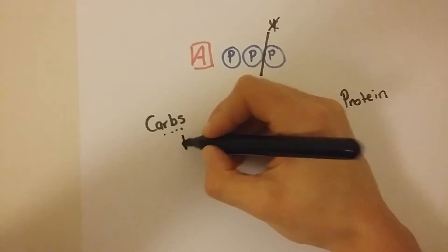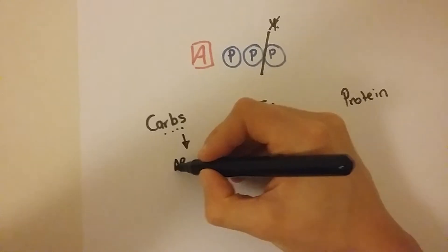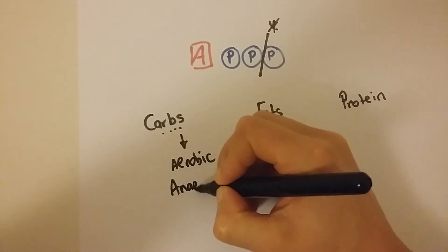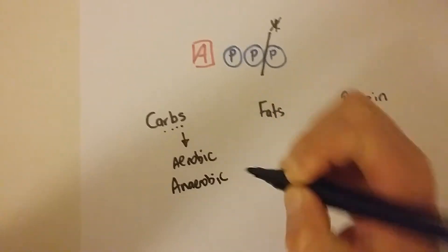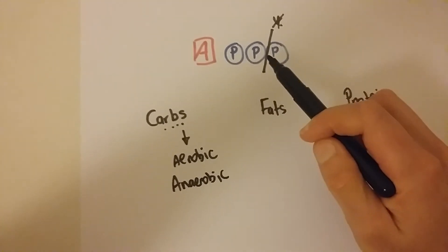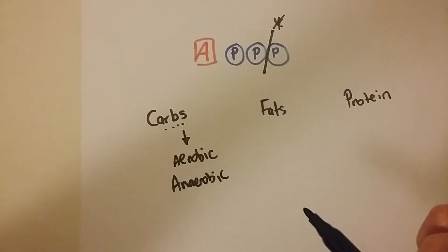So these carbs, basically we know we can get that and convert it using aerobic and also using anaerobic energy systems. So we can convert that carb via aerobic and anaerobic into ATP. We know that that can happen.